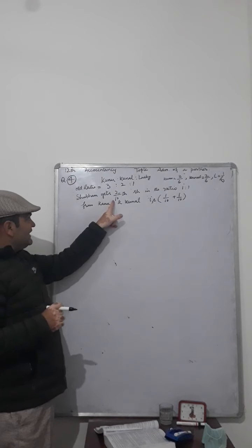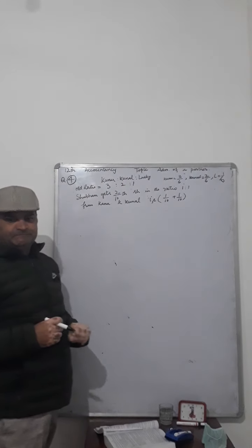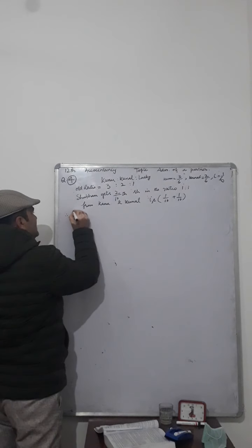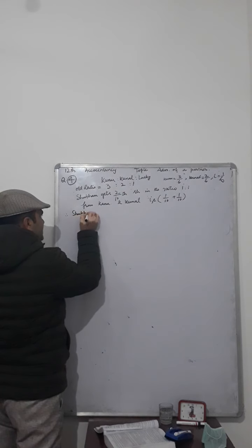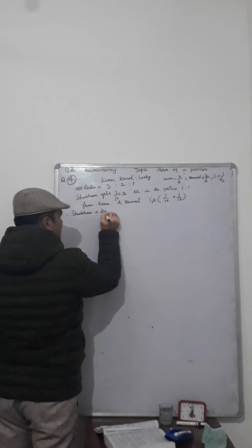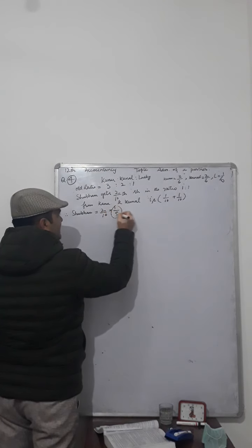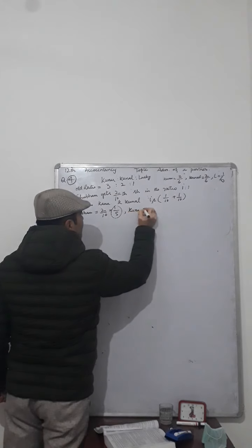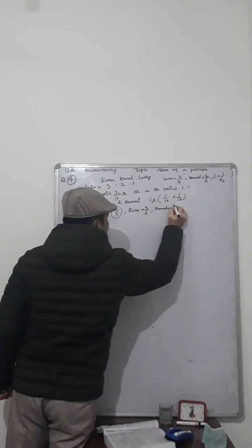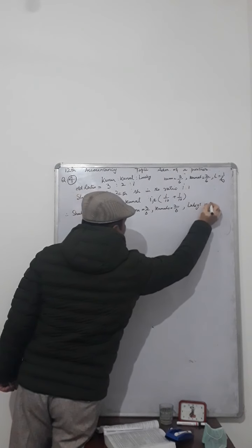Half of this 2 by 10 is sacrificed by Kunu and half is sacrificed by Kunal. So Shubham's share is equal to 2 by 10, which simplifies to 1 by 5. Kunu's old share is equal to 3 by 6 and Kunal's old share is equal to 2 by 6. Lucky's share is equal to 1 by 6.